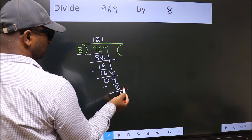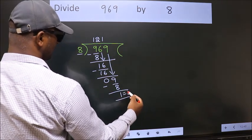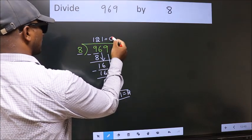No more numbers to bring down. So, we stop here. This is our remainder. This is our quotient.